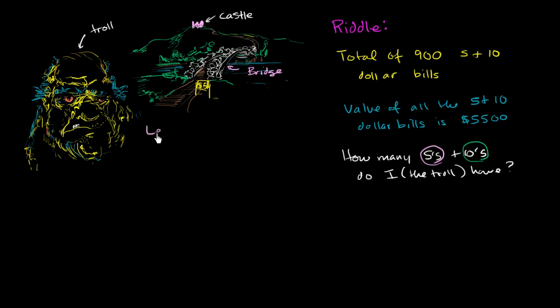I'll say f for 5. Let's let f equal the number of $5 bills. That we have and I'll use the same idea. Let's let t is equal to the number of $10 bills that we have.